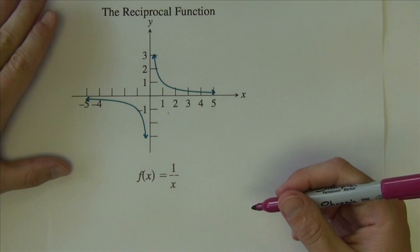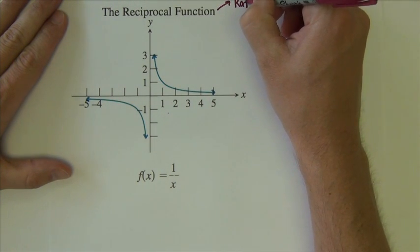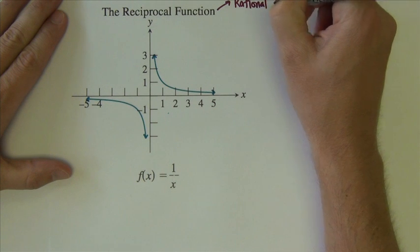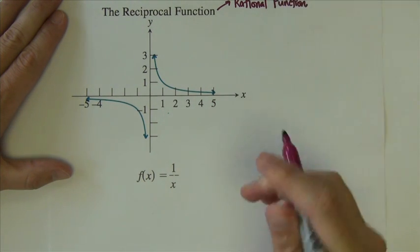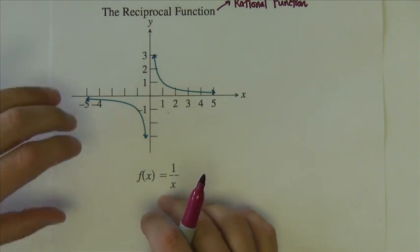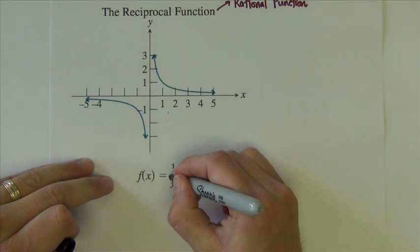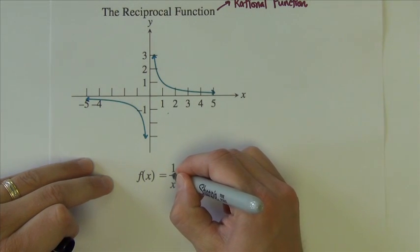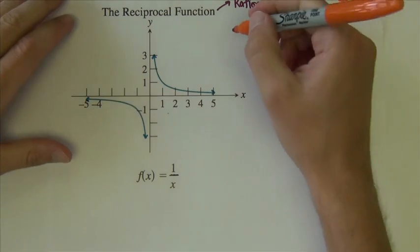The next of our basic functions is called the reciprocal function, also sometimes called a rational function. We call it a rational function because its function looks like a ratio. Its function looks like a fraction—this is a fraction bar right there.